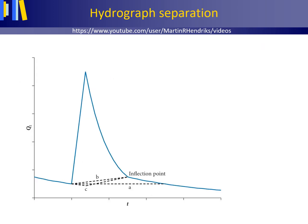There are many methods for hydrograph separation into quick flow and base flow. All methods have in common that they are unavoidably arbitrary. Importantly, one should always stick to the method one sets off with when analyzing hydrographs, or else the comparison basis is lost. For all methods, the area under the hydrograph curve but above the base flow separation line or curve gives the quick flow volume during the precipitation event in cubic meters.